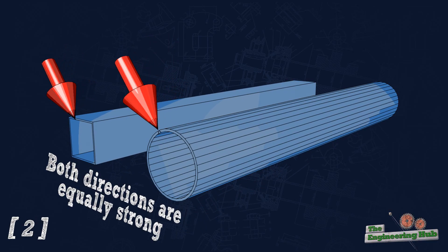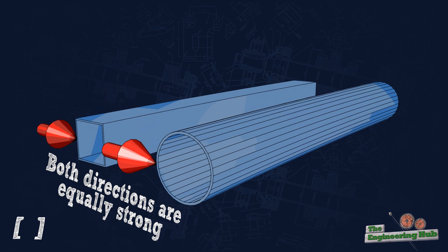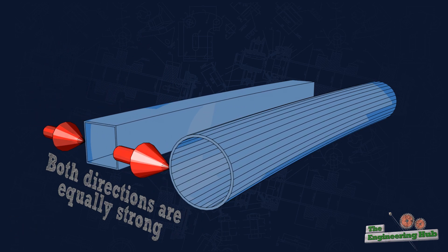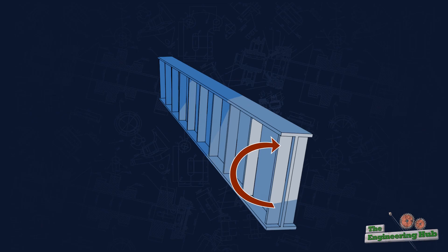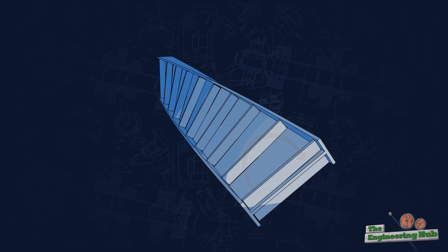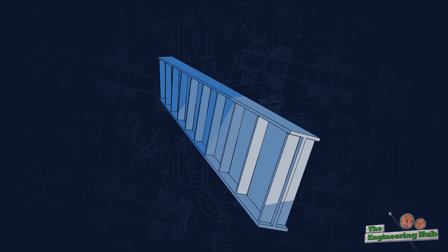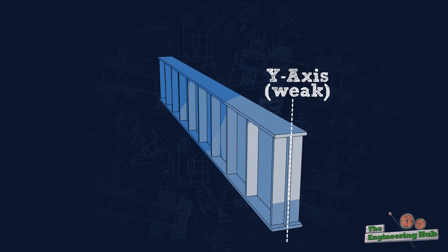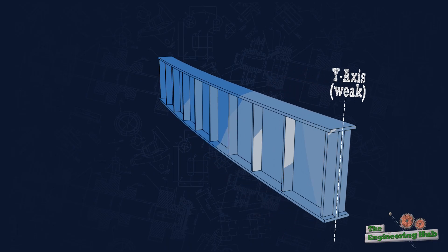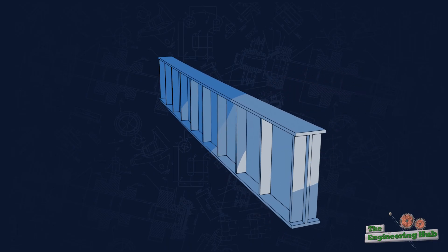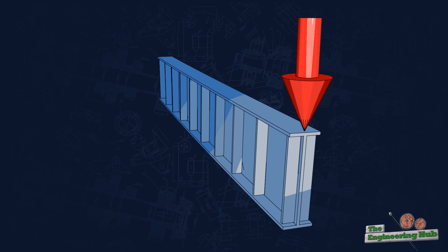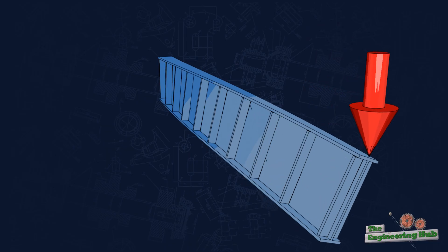In contrast, wide flange sections, as we have seen before, are poor at resisting torsional loads. To make things worse, W sections are also generally weaker in bending about their weak axis. This weak axis makes them even more susceptible to lateral torsional buckling.